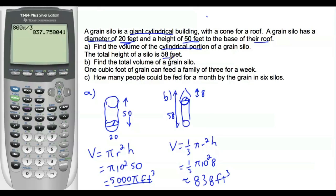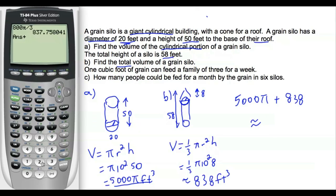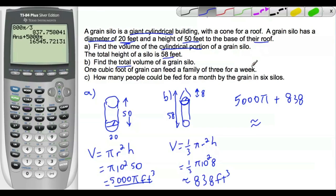So the total volume of a grain silo, we need to add those two things together, this keyword total. So 5000 pi plus 838 will give us to three significant figures. So, let's add 5,000 pi, and three significant figures, 16,500 because the 4 truncates the 5. So, 16,500 total cubic feet for the entire amount of grain that the silo can hold.